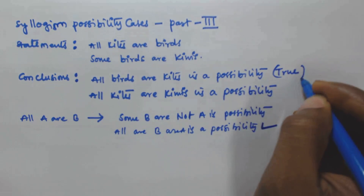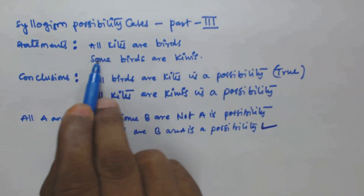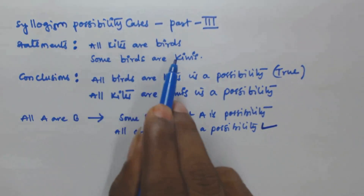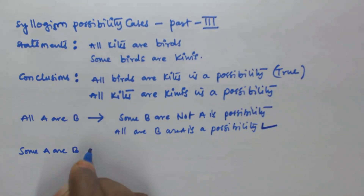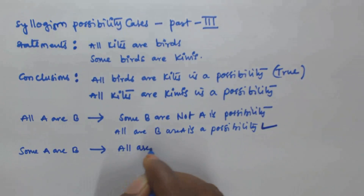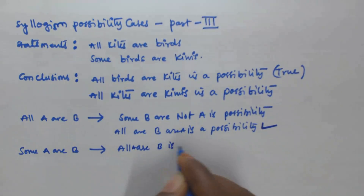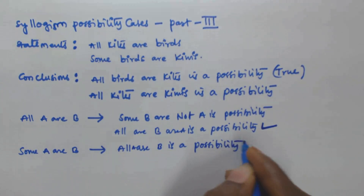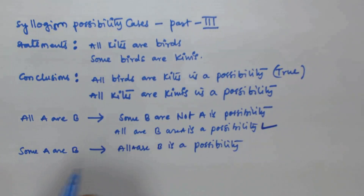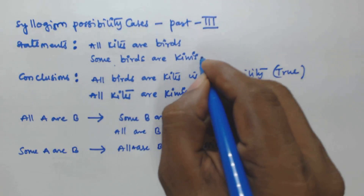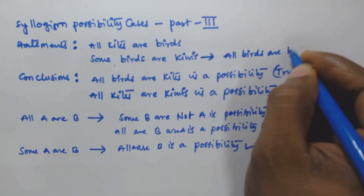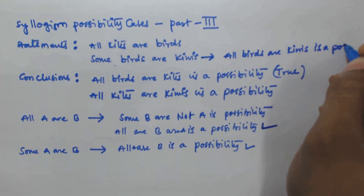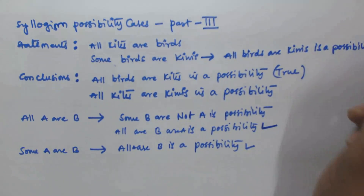Now, from 'some birds are kiwis', this is of the form 'some A are B'. From this we can derive 'all A are B is a possibility' — as I explained in the previous video. So from 'some birds are kiwis', we can derive 'all birds are kiwis is a possibility'.